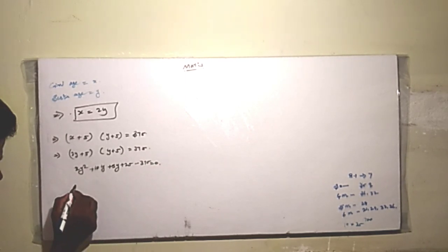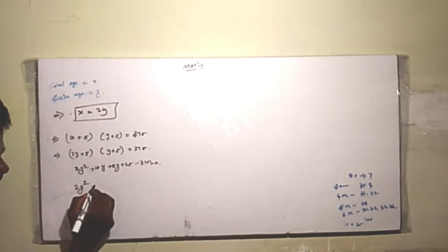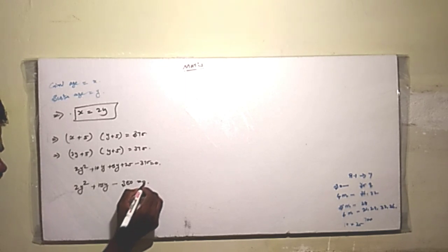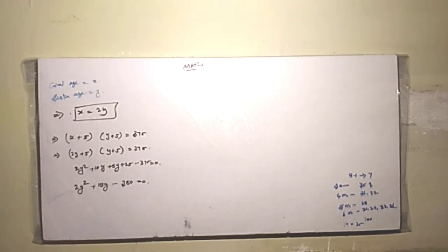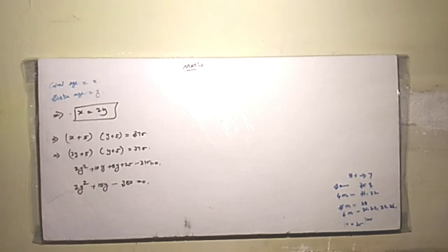So 2y squared plus 15y plus 25 minus 375 equals 0. That gives us 2y squared plus 15y minus 350 equals 0. Okay, so we've reached the quadratic equation.